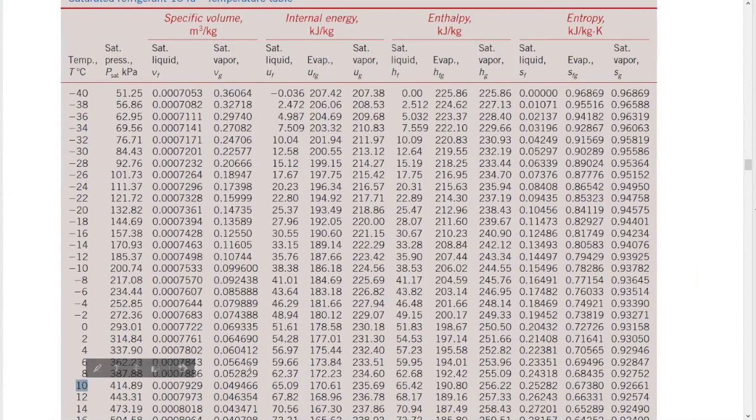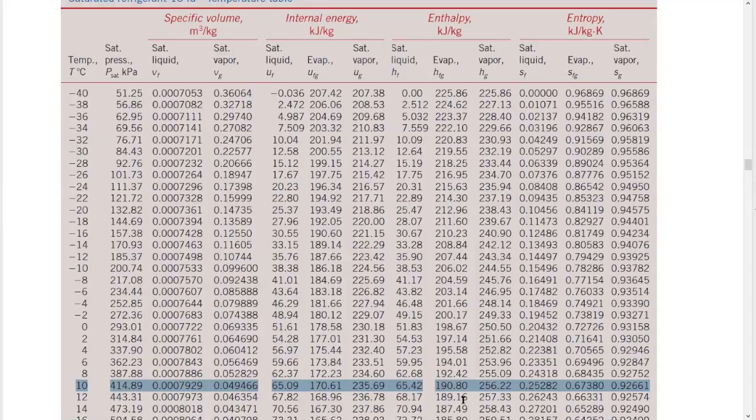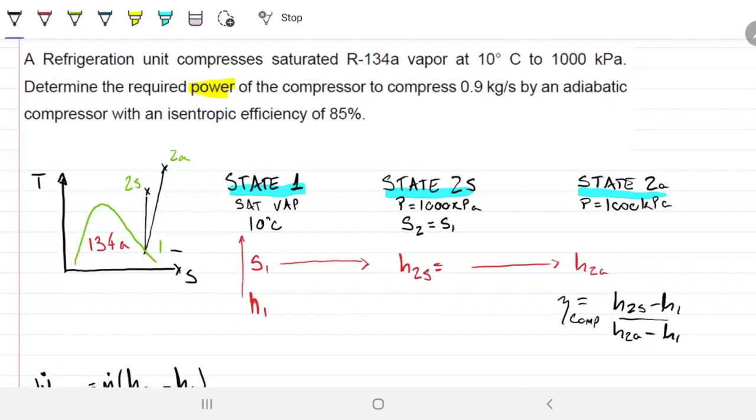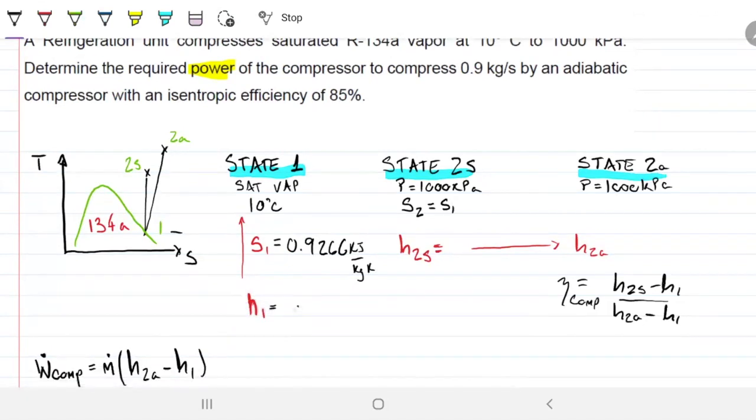Right table. Right temperature. So my enthalpy is, enthalpy is saturated vapor, 256.22. And my entropy is 0.9266. So let's write those down. 0.9266 kilojoules per kilogram Kelvin. And enthalpy is 256.22 kilojoules per kilogram.